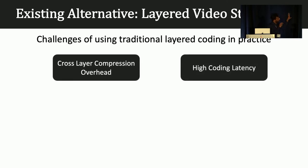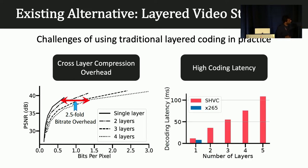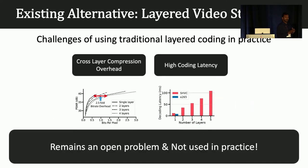The problem with layered streaming is that there are two issues: compression overhead and coding latency. This plot shows that it requires 2.5x more bits to achieve the same quality compared to non-layered coding — the current practice. It also has a latency problem that increases proportionately as we increase the number of layers. Because of these problems, most industry solutions do not adopt layered streaming, even though it is well-suited for streaming videos over the internet.